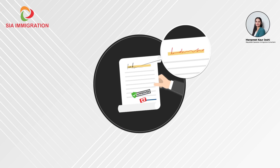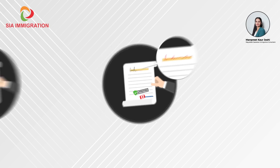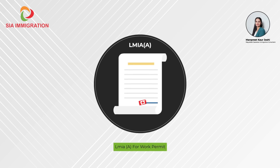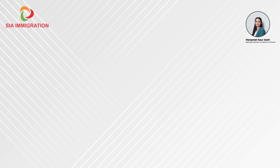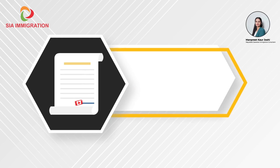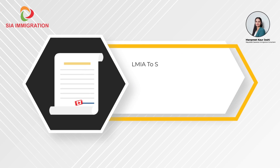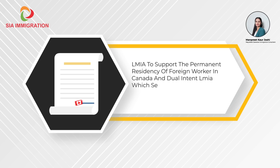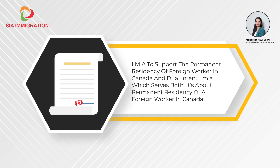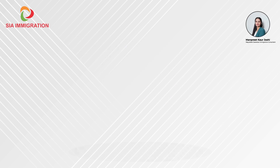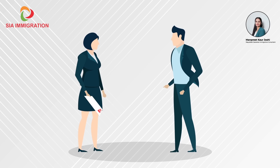The Canadian employer can also change the name after an LMIA application is approved under the name of a particular candidate. There are three types of LMIAs: LMIA for a work permit, LMIA to support the permanent residency of a foreign worker in Canada, and dual intent LMIA, which serves both purposes.